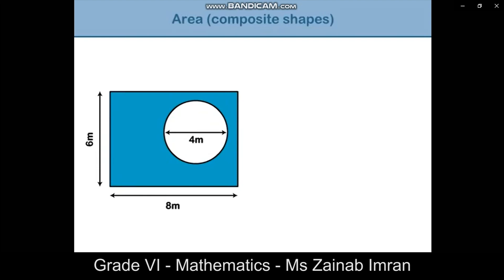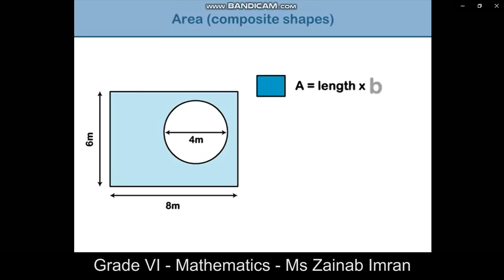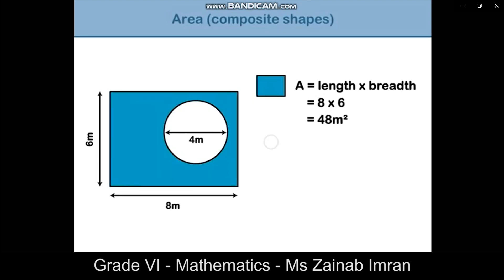Substitute in the values for the length and breadth, so the area is 8 times 6, which equals 48 meters squared. Next, we need to find the area of the circle. The diameter of the circle is 4 meters, so the radius is 2 meters. Use the formula area equals pi r squared, which is 3.14 times 2 times 2, giving an answer of 12.56 meters squared.